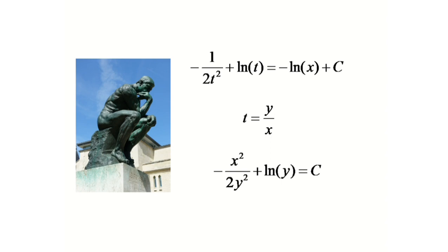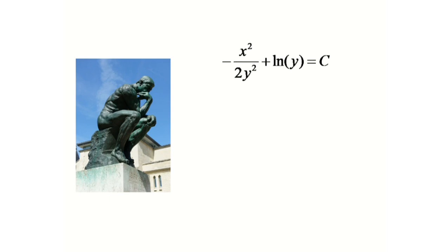And according to the question, at y equals 1, x equals 1. So if we put x equals 1 and y equals 1 in this equation, we will get the value of c equals minus half. So our final solution of this differential equation will become minus x square by 2y square plus ln y equals minus half.